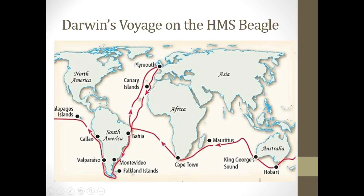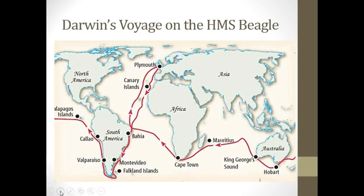Darwin's voyage on the HMS Beagle lasted about five years. The ship was to basically survey wherever it sailed. It started in Plymouth, went down to the Canary Islands, around the tip of South America, over to Australia, back around the southern tip of Africa, to the tip of South America, and then back up to Plymouth. So he spent five years collecting data on different species all throughout the world.